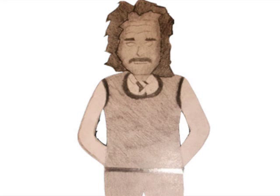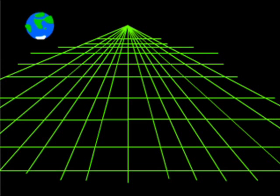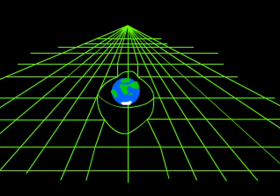Einstein's theory of relativity was published by Albert Einstein in 1915. It explains gravity by stating that everything creates dips in space, and the larger the dip is, the more gravity is on the object. It's not the only theory, just the simplest.